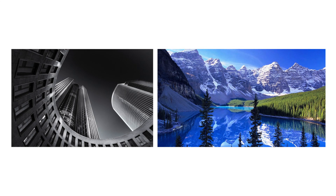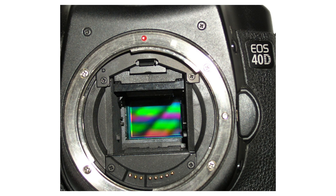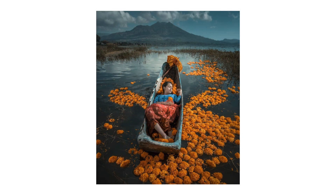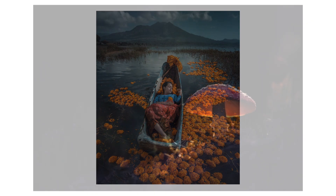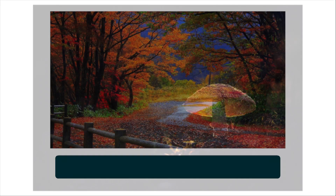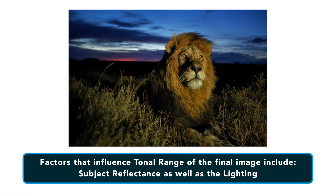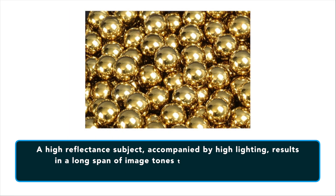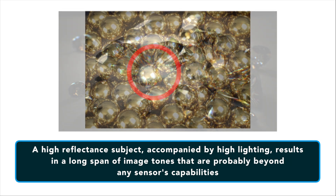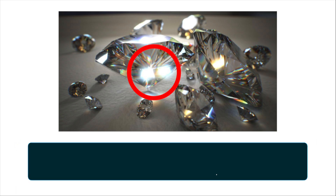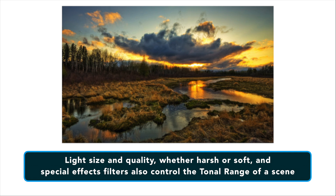A rich range of tones in a colored as well as a black and white image is vital to success. In digital photography, this is limited to the sensor's dynamic range and its ability to capture a wide enough distribution of tones suitable for the purpose of the photo. Factors that influence the tonal range of the final image include subject reflectance as well as the lighting. A high reflectance subject accompanied by high lighting results in a long span of image tones that are probably beyond the sensor's capability. Also, light size and quality — harsh or soft — also control the tonal range of a scene.